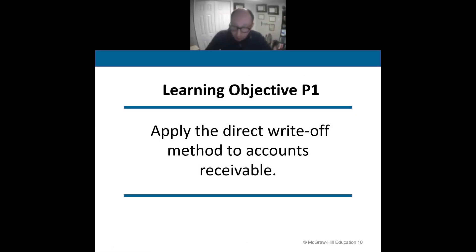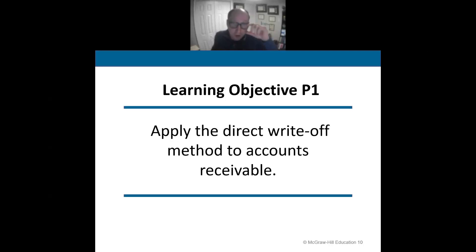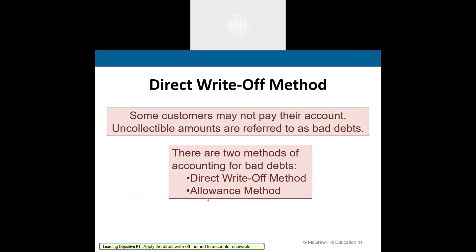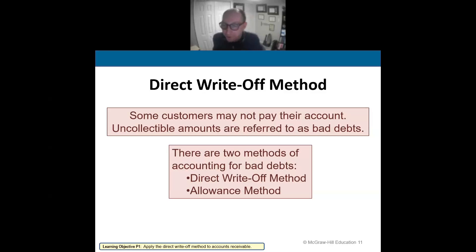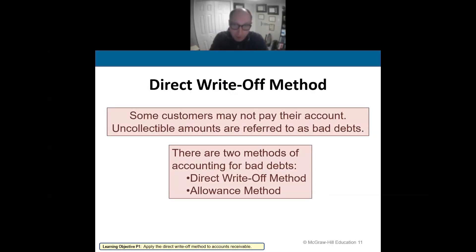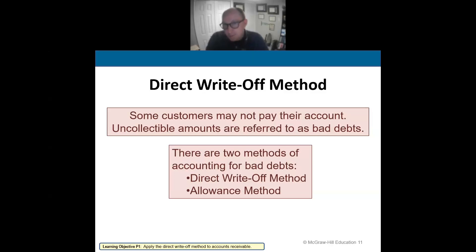Sometimes customers don't pay us. We call those uncollectible amounts bad debt expense. We use what's called the direct write-off method. With accounts receivable, we have an aging report that shows how long an account has been outstanding: zero to 30 days is current, 31 to 90 days means they're past due, and 91 to 180 days means the account is significantly overdue. At that point, we would typically send it to collections.